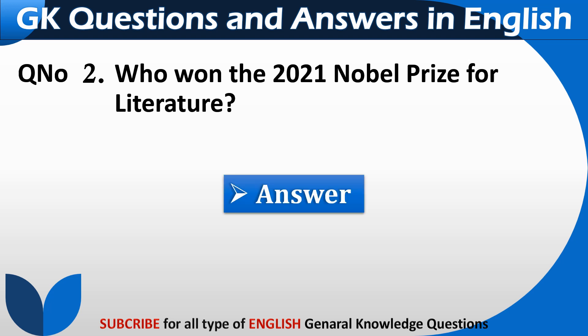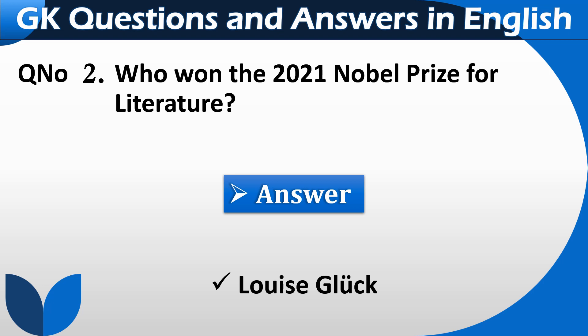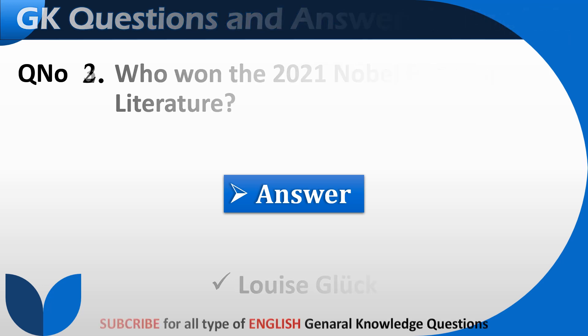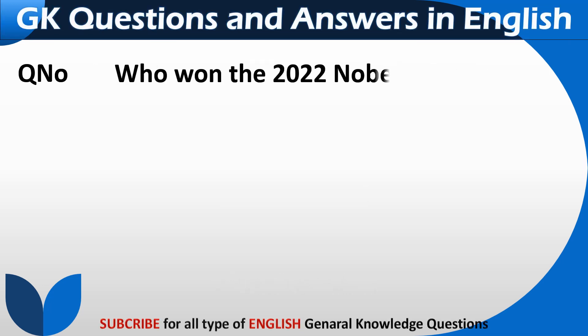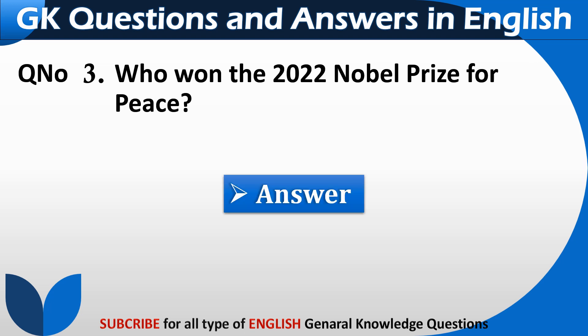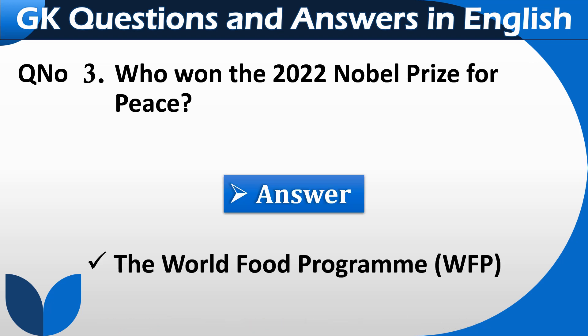Who won the 2021 Nobel Prize for Literature? Lewis Klock. Who won the 2022 Nobel Prize for Peace? The World Food Program.